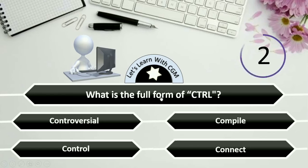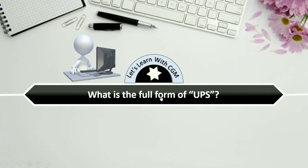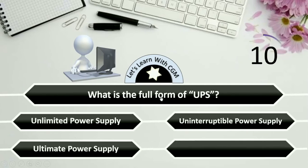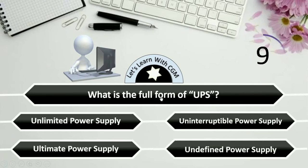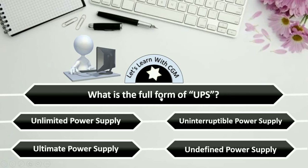What is the full form of UPS? Options are Unlimited Power Supply, Uninterruptible Power Supply, Ultimate Power Supply, or Undefined Power Supply. The answer is Uninterruptible Power Supply.